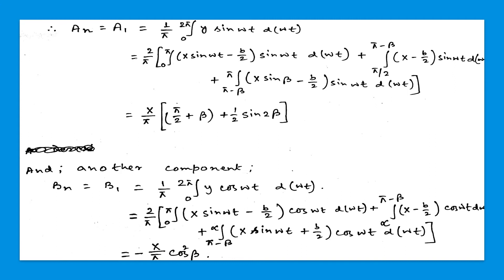For that we consider A1 equals 1/π times the integral from 0 to 2π of Y sin(ωt) dωt. That equals 2/π times the integral from 0 to π of (X sin(ωt) minus B/2) sin(ωt) dωt, plus the integral from π minus β to 2π minus β of (X sin(ωt) minus B/2) sin(ωt) dωt.